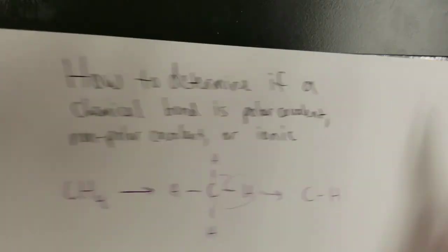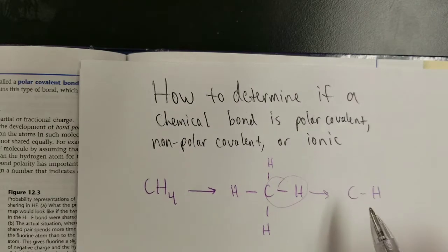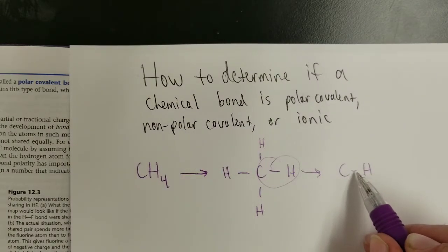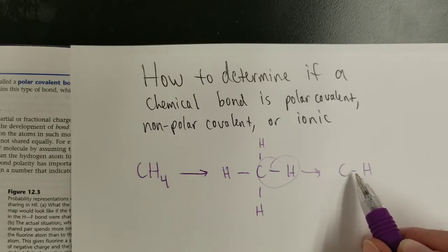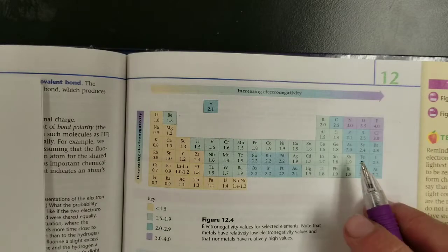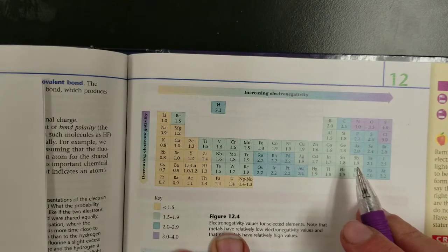Because what this comes down to is, I'm asking you, do these share electrons equally? Do they share them unequally? Or do they not even share at all and have electrons transferred from one atom to the other? We find that out through looking at the electronegativity values.